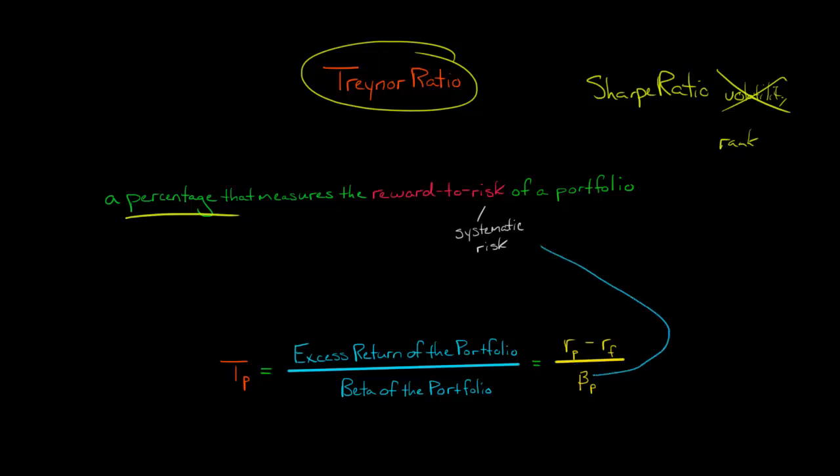Beta is measuring systematic risk. We've got our excess return divided by the systematic risk measure, which is beta.